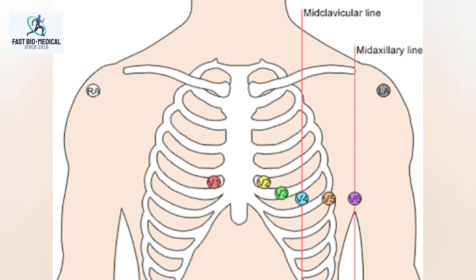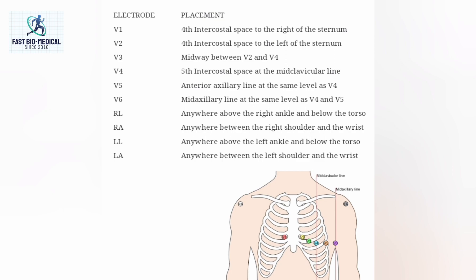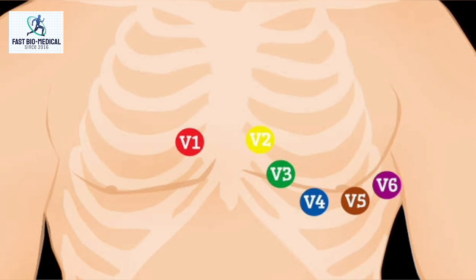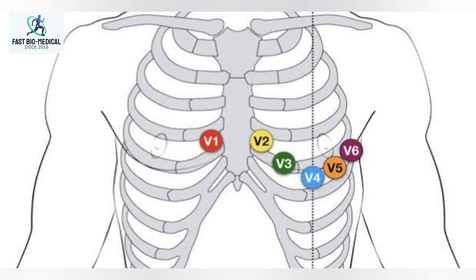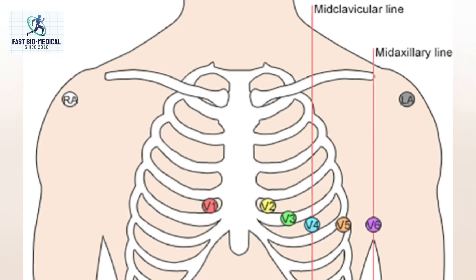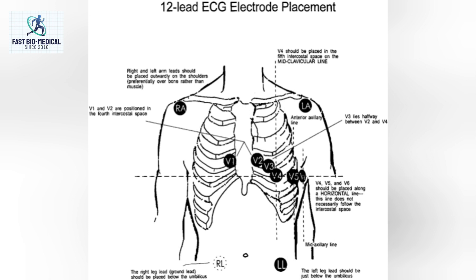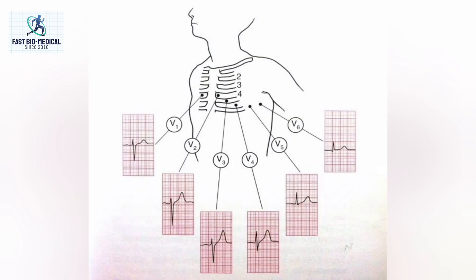V1 is placed on the patient's chest at the 4th intercostal space to the right of the sternum. V2 is at the 4th intercostal space to the left of the sternum. V4 is at the 5th intercostal space at the mid-clavicular line, as shown in the video. V3 is placed exactly in between V2 and V4. V5 is at the anterior axillary line at the same level as V4, and V6 is at the mid-axillary line at the same level as V4 and V5. The exact placement of chest electrodes is shown on the display.